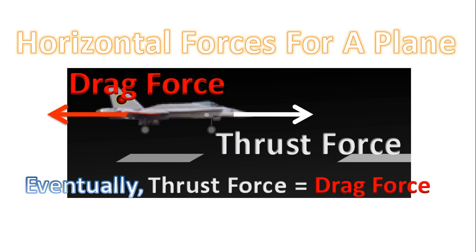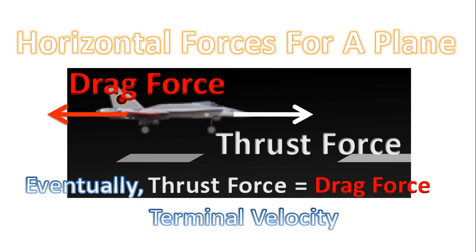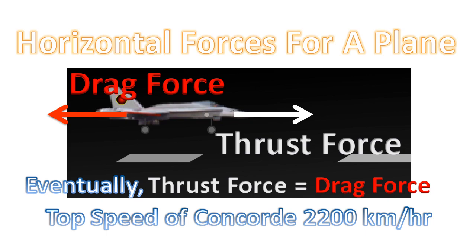Eventually we'll hit a point where the thrust force is equal to the drag force. When we hit that point, we say the plane has hit terminal velocity, or its terminal speed — its maximum speed. Now for a Concorde, this top speed is around 2200 kilometers per hour.